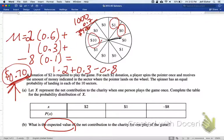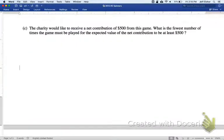Alright, let's look at part C. The charity would like to receive a net contribution of $500 from this game. What's the fewest number of times the game must be played for the expected value for the net contribution to be at least $500.